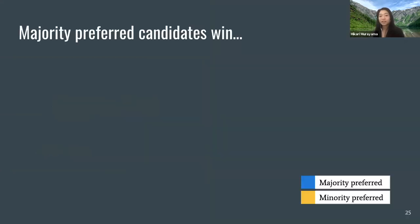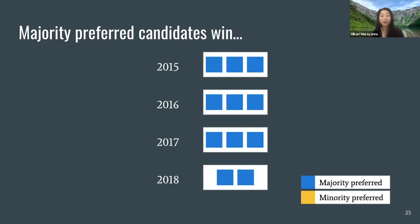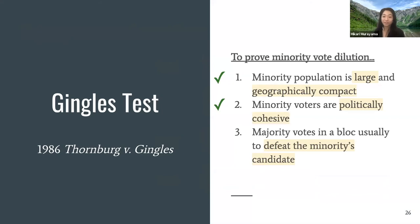Looking at the school board election results from 2015 onwards: in 2015 the majority-preferred candidate won all three seats; in 2016, 2017, 2018 — you get the point. Minority voters consistently voted for the losing candidate, while the majority voters consistently voted for the winning candidate, and the minority candidate never won. This means we can cross off point three of the Gingles test, and we've now proven that minority vote dilution existed in these school board elections.